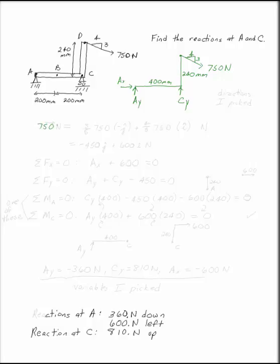Break your 750 newton load up into components. This is going to be 3/5 times 750 in the negative j-direction and 4/5 times 750 in the i-direction.